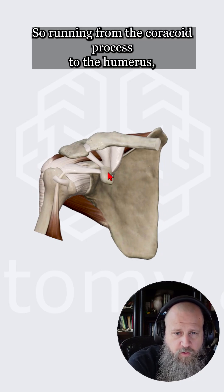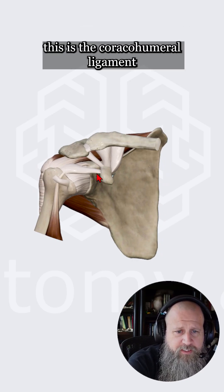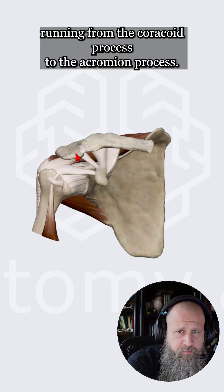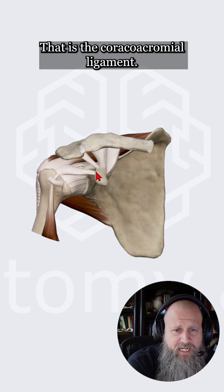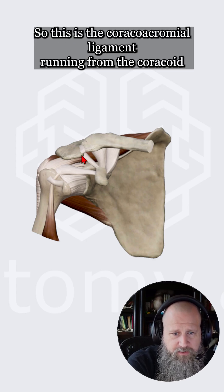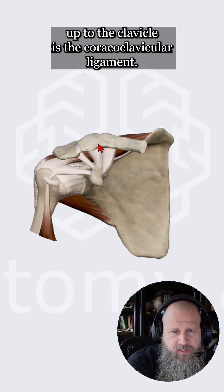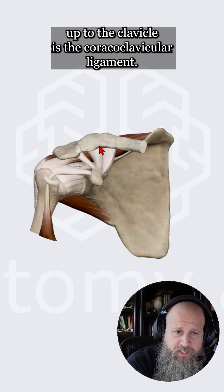Running from the coracoid process to the humerus, this is the coracohumeral ligament. Running from the coracoid process to the acromion process, that is the coracoacromial ligament. Running from the coracoid process up to the clavicle is the coracoclavicular ligament.